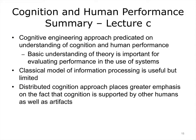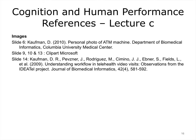The lectures in this series introduced cognitive theory in relation to a cognitive engineering approach to human-computer interaction and human factors. We considered a classical model of information processing and introduced different ways to understand knowledge. The concept of mental models is particularly important. In recent years, a distributed cognition approach has emerged as an alternative to the classical model of information processing.